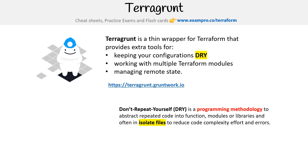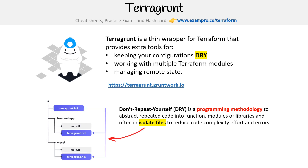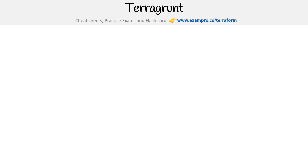The idea here is the concept of don't repeat yourself. It's a programming methodology to abstract repeated code into functions and modules or libraries, often in isolated files, to reduce code complexity, efforts, and errors. The way that works is that you'll see these HCL files, which are the Terragrunt code, and they're actually named terragrunt.hcl. And that's what's going to be used to abstract away or dry up your Terraform files.